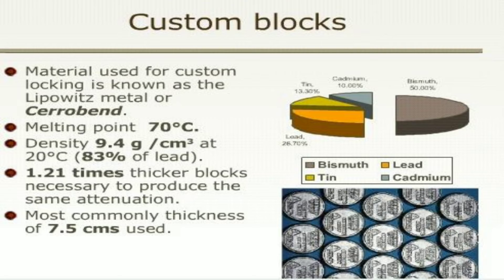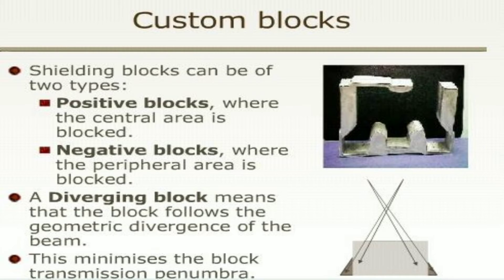Custom blocks are made up of Lipowitz/Cerrobend material which has a melting point of 70 degrees Celsius with a density of 9.4 grams per centimeter cube at 20 degrees Celsius, which is 83% of lead. 1.21 times thicker blocks are necessary to produce the same attenuation done by lead blocks, and the most commonly used thickness is 7.5 cm. Shielding blocks are of two types: positive blocks, where the central area is blocked, and negative blocks, where the peripheral area is blocked. In a diverging block, the block follows the geometric divergence of the beam, which minimizes the block transmission penumbra.